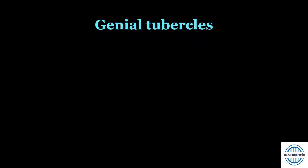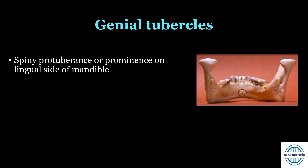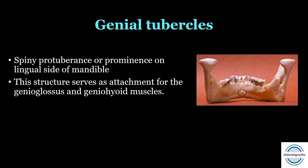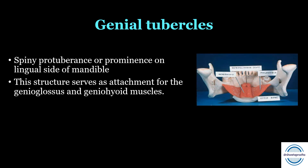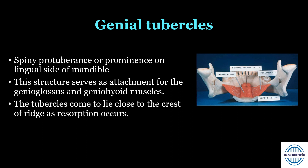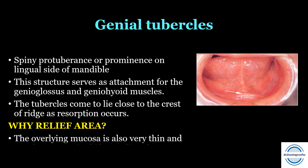The next are the genial tubercles — spiny prominences of bone located on the lingual aspect of the mandible. These structures serve as attachment for the genioglossus and geniohyoid muscles. After resorption, these tubercles come to lie closer to the crest of the ridge and can be palpated in the oral cavity. They should be relieved because the overlying mucosa is very thin over these tubercles and may get traumatized if not relieved.